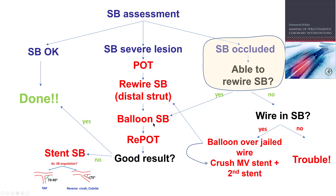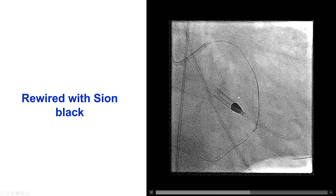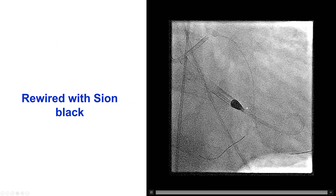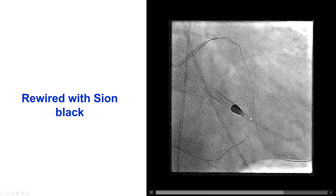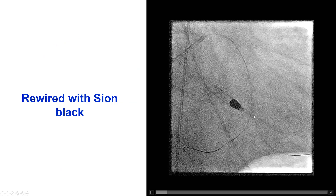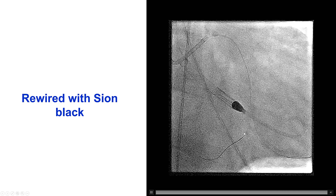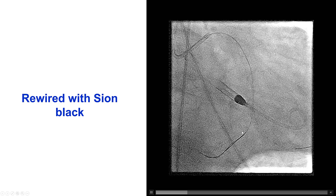But if balloon inflation is insufficient for getting a good result, then the side branch may need to be stented, either using the TAP technique, reverse crush, or culotte technique. In this particular case, we were actually able to rewire with another C-On Black guidewire using the original wire as a marker of the location of the distal circumflex.